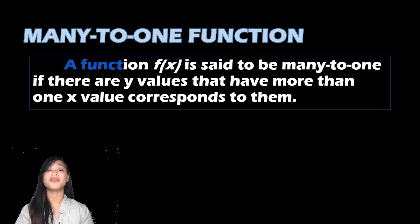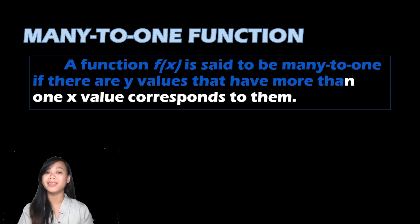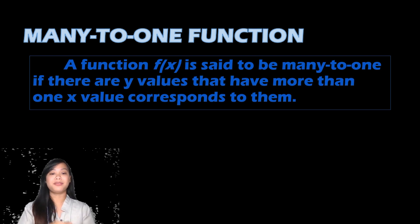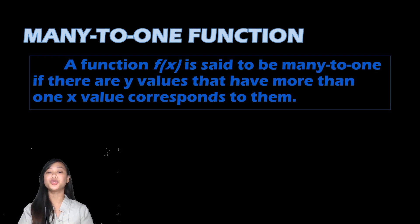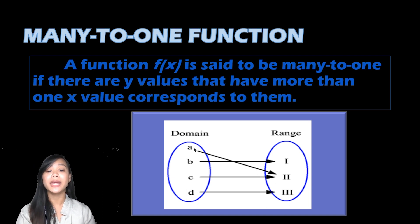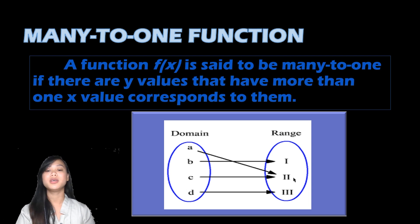There is another type of function called the many-to-one function. A function f(x) is said to be many-to-one if there are y values that have more than one x value corresponding to them. In the sample mapping, a corresponds to two and c also corresponds to two in the range — so we have a many-to-one function, and it is still a function.